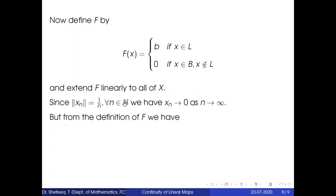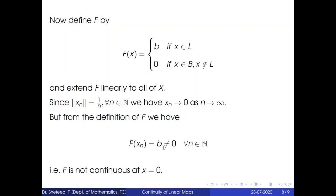Since ||xn|| = 1/n for all n, xn converges to 0 as n tends to infinity. But by the definition of F, f(xn) = b, which is nonzero, for all n. So xn converges to 0, yet f(xn) converges to b ≠ 0. This means xn → 0 does not imply f(xn) → 0, so f is not continuous at x = 0. This completes the proof of Theorem 6.1.